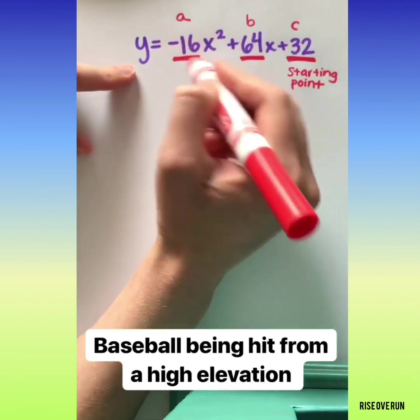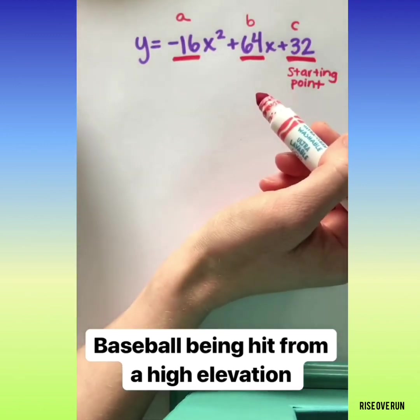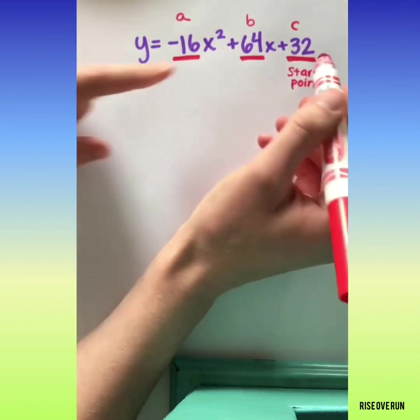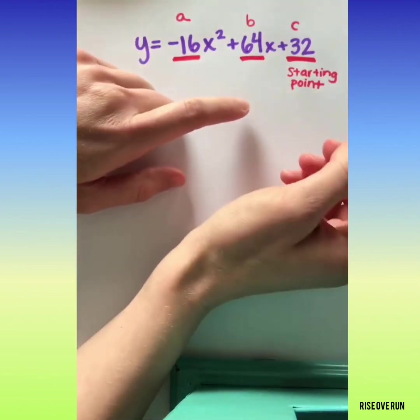This equation here represents a baseball being hit from a high elevation. It's in feet per second. Therefore, this 32 means that 32 feet was the initial height.